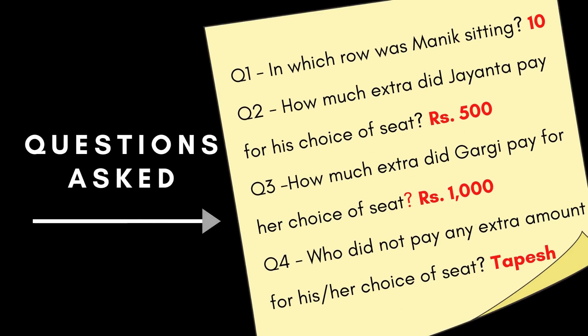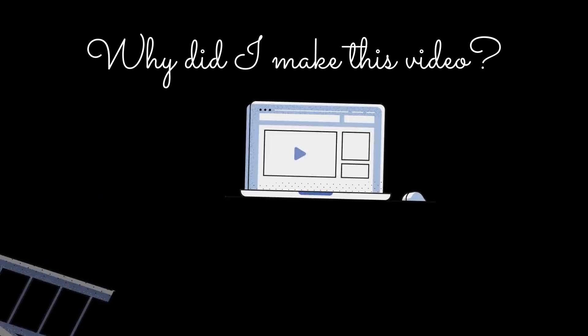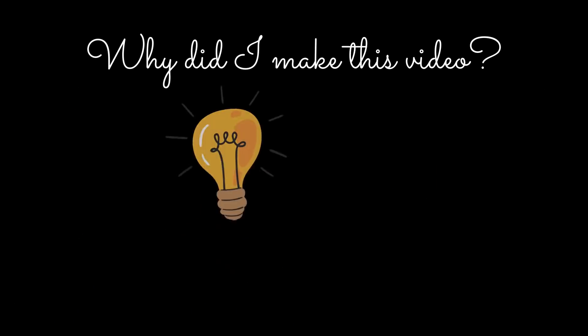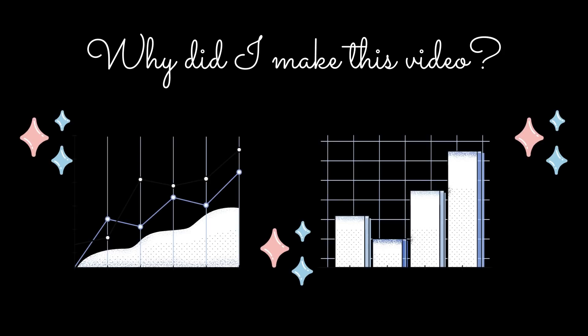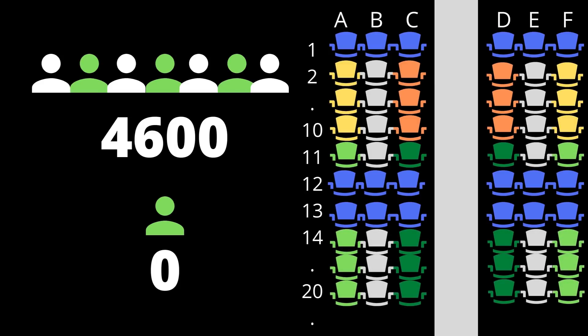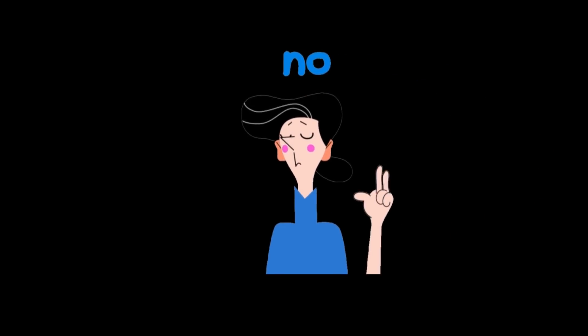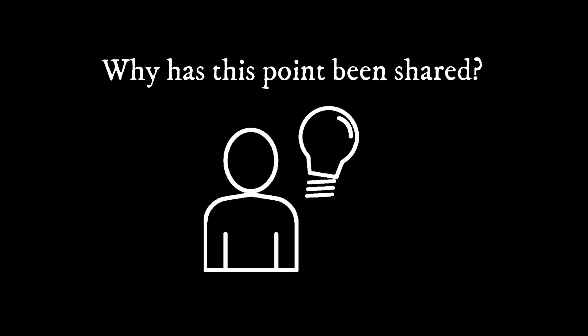My only objective behind making this video was to ensure that from now on, when you solve DILR questions, you look for intentional clues and constraints that have been put in place for you to decode them. For example, the 4600 point or the row number 11 was mentioned specifically so that it could make it easier to solve this question. And someone who could not identify these clues while reading the question in the first place might have taken a long time to try understanding how this question was to be solved. I'm not saying this is the shortest method to solve this question. There might be a shorter method as well. But all I'm saying is develop that approach of thinking from the point of view of the paper setter rather than an aspirant who is appearing for the exam. That's surely going to help you with DILR.